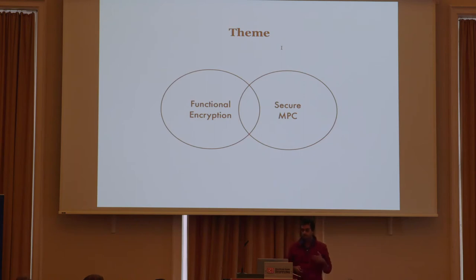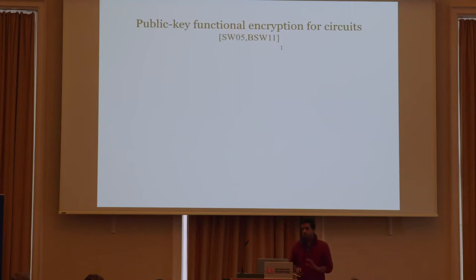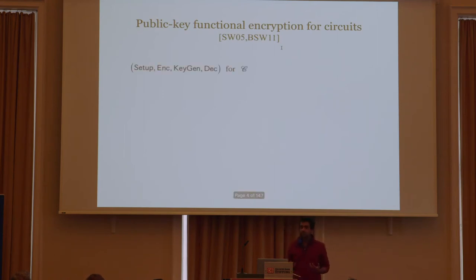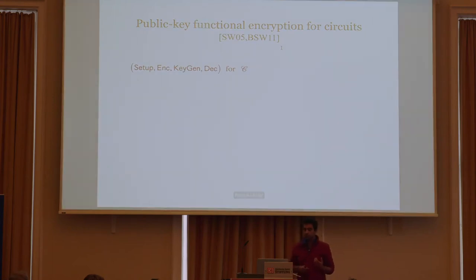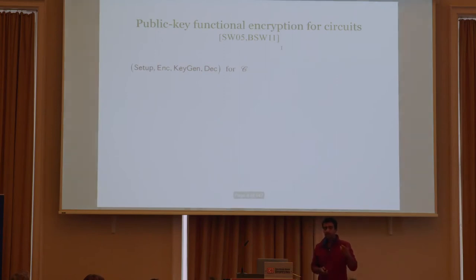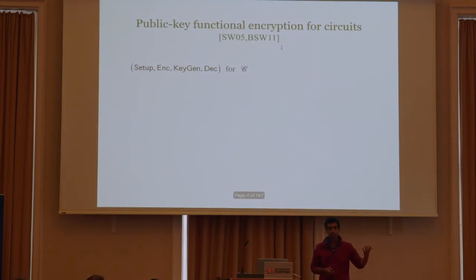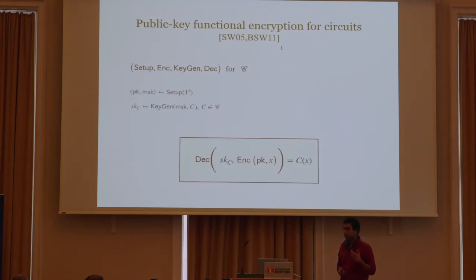Let me start by giving the preliminary background on function encryption. For most of the talk, I'm going to stick to public key function encryption. FE is a generalization of standard public key encryption that additionally has a key generation algorithm. The key generation algorithm allows you to generate functional keys associated with circuits, such that if you have a ciphertext corresponding to encryption of some message X, you can use the functional key associated with circuit C to obtain C of X.